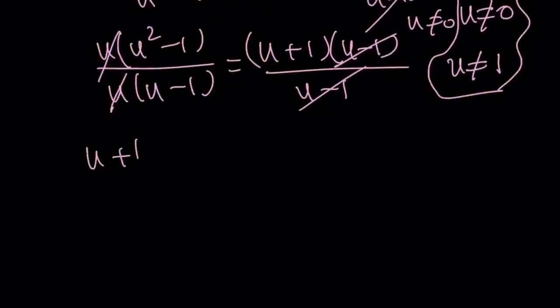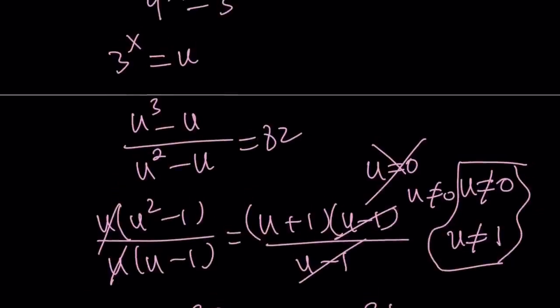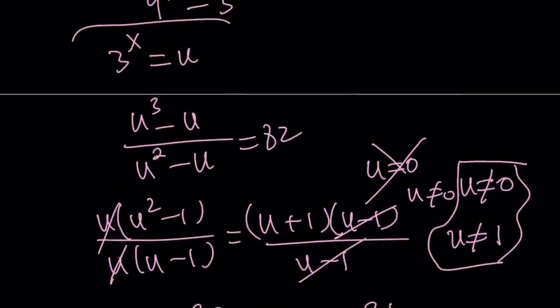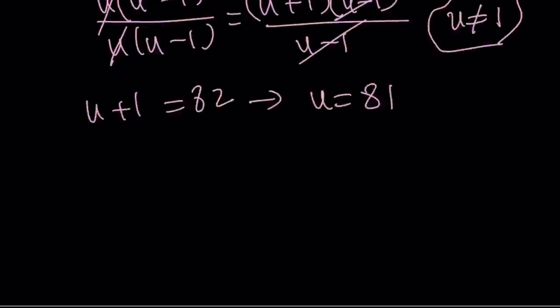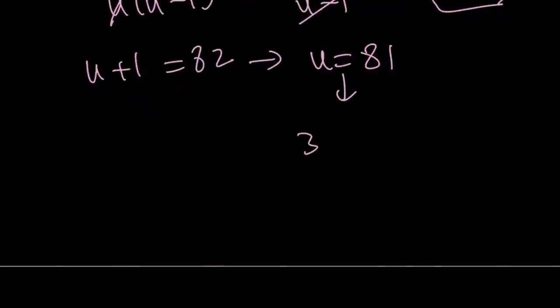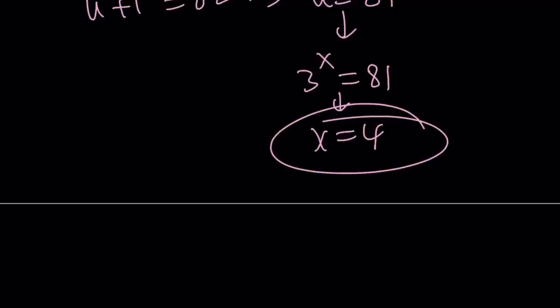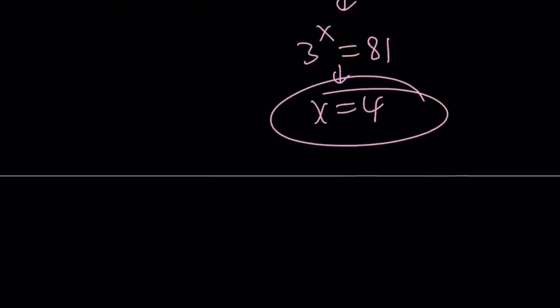u plus 1 equals 82. And that implies u equals 81. But what is u? u is 3 to the power x. So let's set this equal to 3 to the power x equals 81. And then this implies x equals 4.